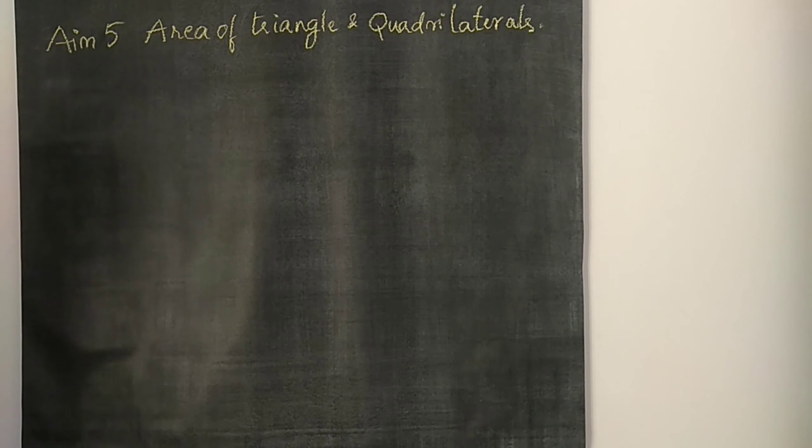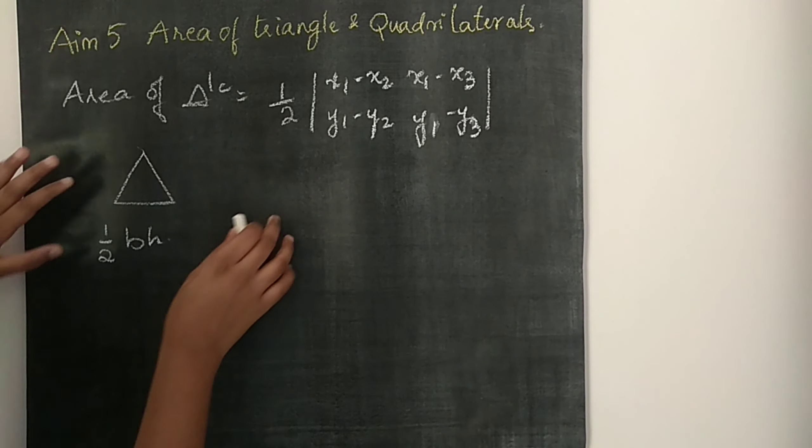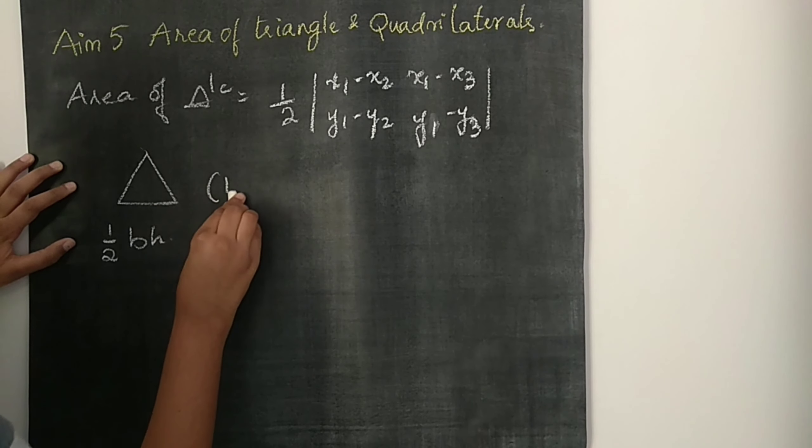The formula is: half into x1 multiplied by (x1 minus x2) and (x1 minus x3), then (y1 minus y2) and (y1 minus y3). This is the formula we are going to use to solve.